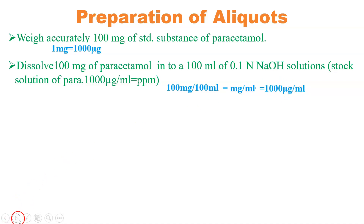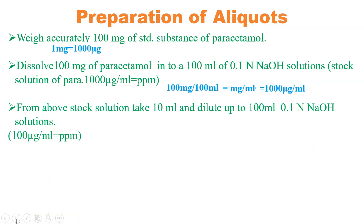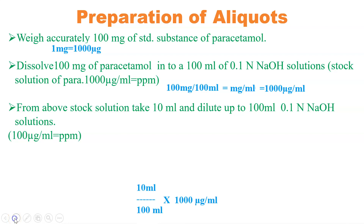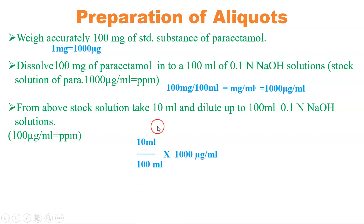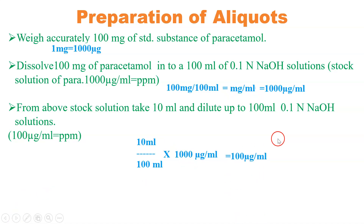This will be stock solution one. From the above stock solution, take 10 ml and dilute up to 100 ml with 0.1 normal HCl solution. As we have taken 10 ml and dissolved in 100 ml at a concentration of 1000 microgram per ml, the resulting solution will be 100 ppm or 100 microgram per ml.